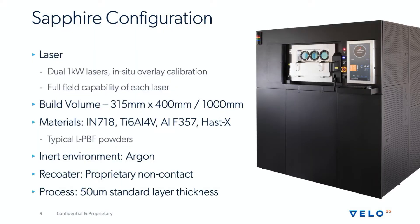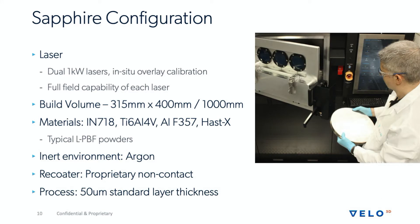Lasers on the Sapphire system are one kilowatt. It's a two-laser system with an in-situ overlay calibration. The full-field capability of each laser means that both lasers can be used anywhere on the build plate. The build volume is 315 millimeter round build plate by 400 millimeters tall. We've also introduced our new one-meter Z system, which opens up a thousand millimeters of build height in Z. Our current materials are Inconel 718, Ti-64, aluminum F-357, and Hastelloy. We use typical laser powder bed fusion powders in an argon inert environment. The recoater is a proprietary non-contact recoater and the process uses a 50 micron standard layer thickness.